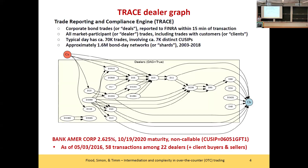On a typical trading day there will be on the order of 70,000 bond transactions in the market, covering on the order of 7,000 distinct bonds or CUSIPs. To look at the full network you quickly run into a hairball problem, so what we're going to do is shatter the daily network into CUSIP-specific networks. What you see here is a particular bond — a snapshot of a single trading day in 2016.